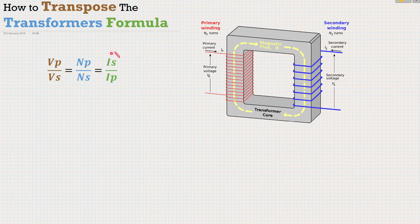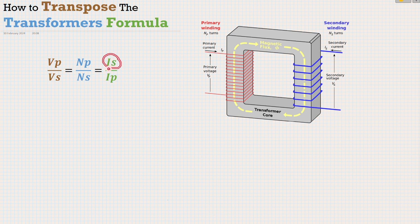And also in the last section, we've got the current secondary and current primary. Bear in mind though, when you first write this formula out, you'll notice that the secondary current is actually at the top of the divisor line, compared to these sections where number of turns primary and voltage primary are at the top. So bear that in mind when you write it out to begin with.